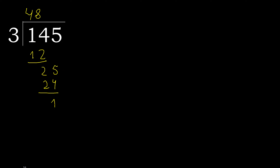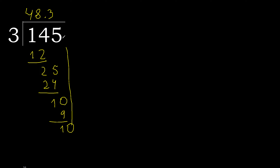There is no next number, therefore complete. Always complete with 0 — place a decimal point here. Bring down 10. 3 multiplied by 4 is greater. 3 multiplied by 3 is 9. Subtract. Complete — the decimal point is here.